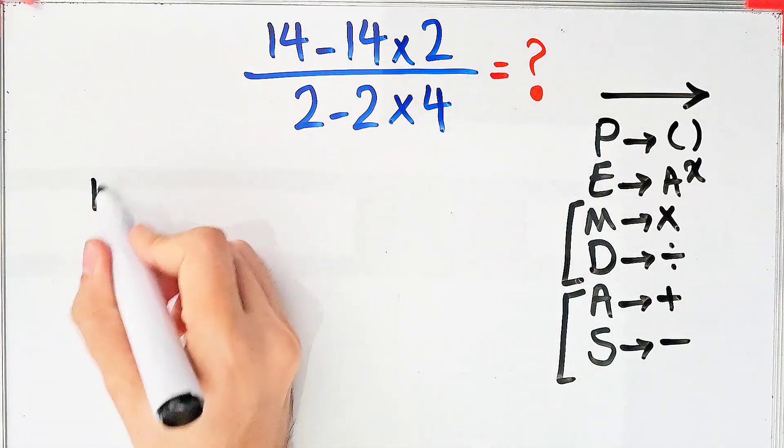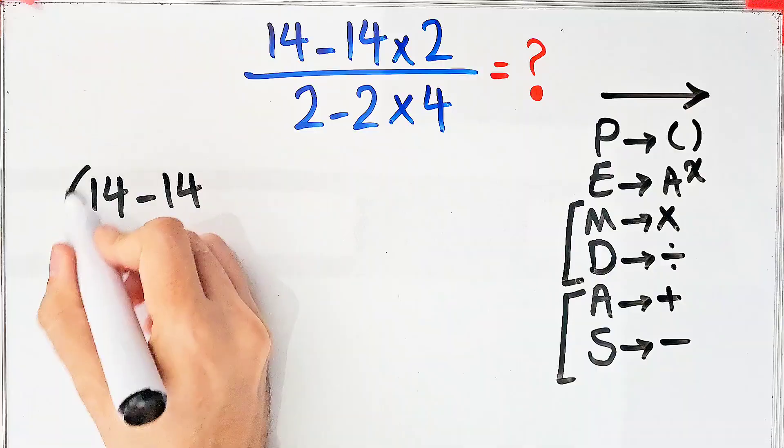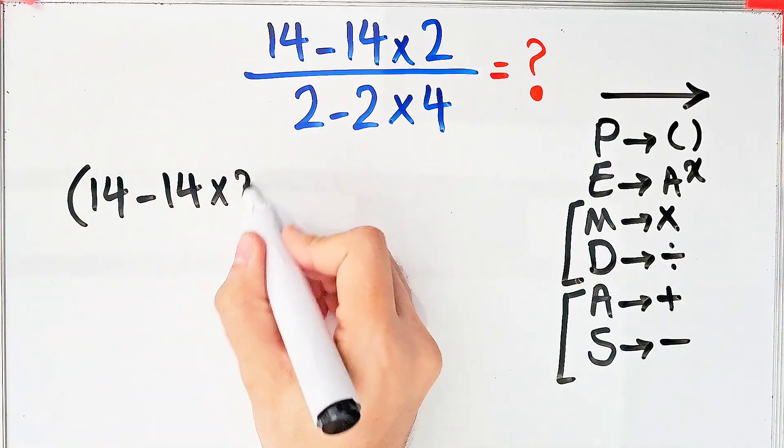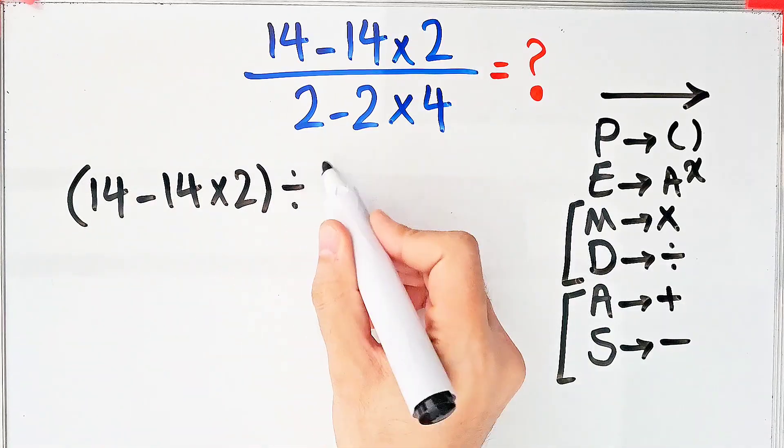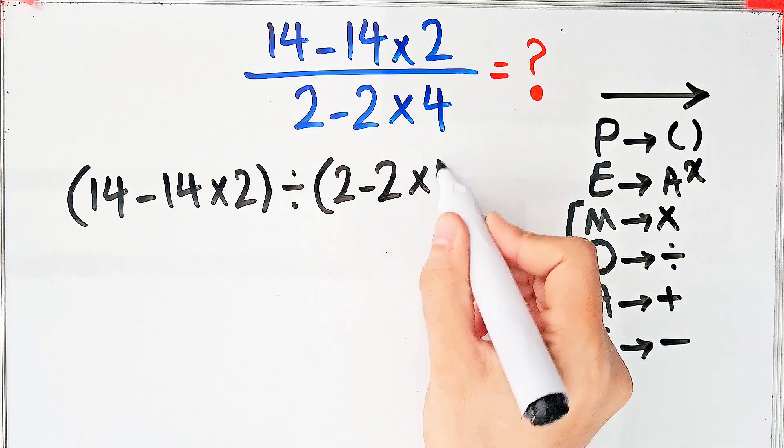First, we simplify this expression. We have 14 minus 14 times 2, then divided by 2 minus 2 times 4. According to the PEMDAS rule...